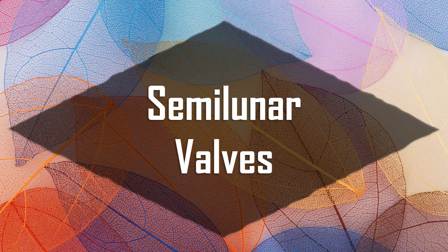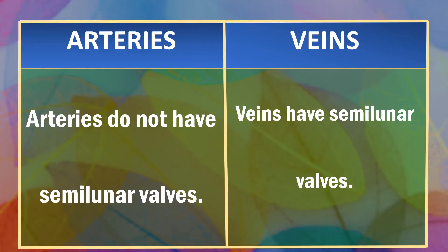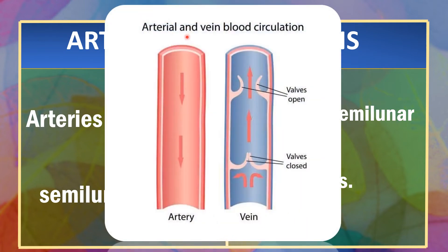Now, let's differentiate between arteries and veins based on the presence of semilunar valves. Arteries do not have semilunar valves while veins have semilunar valves. In this diagram, we can see the artery and the vein. Veins have semilunar valves to prevent the backflow of blood, as the blood running through them is at a much lesser pressure than in arteries. The blood running in the veins also many times has to defy gravity.